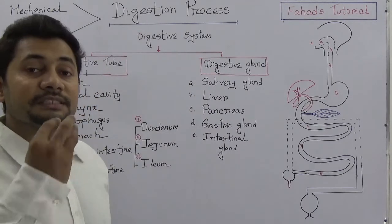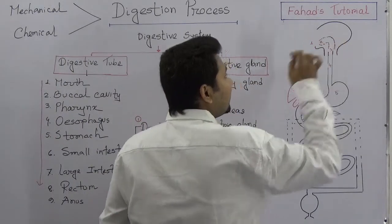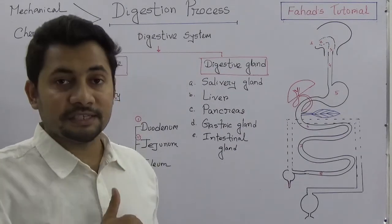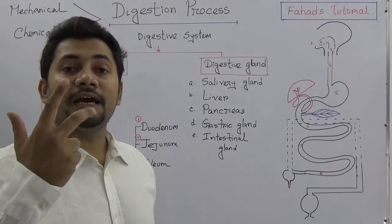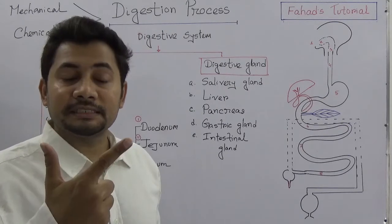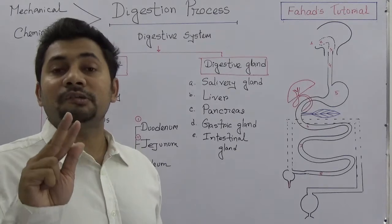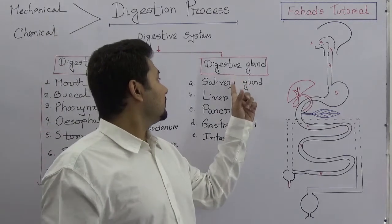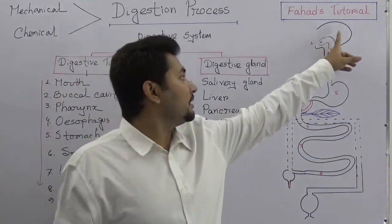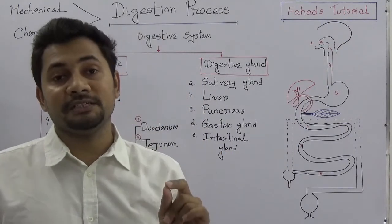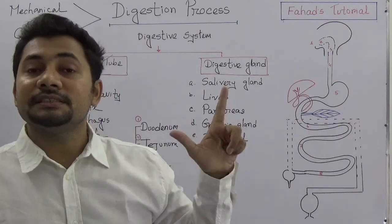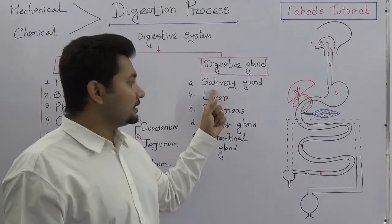The first digestive gland is the salivary gland, situated here in the mouth region. We have three pairs of salivary glands: the parotid gland, the submaxillary gland, and the submandibular gland. I mistakenly said pituitary earlier — the pituitary is the gland situated in the brain and is called the master gland. But the salivary glands are parotid, submaxillary, and submandibular.